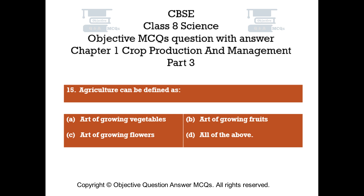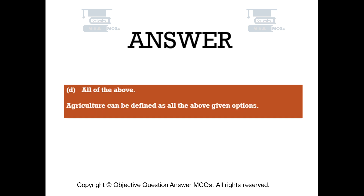Question number 15. Agriculture can be defined as. Option A: Art of growing vegetables. Option B: Art of growing fruits. Option C: Art of growing flowers. Option D: All of the above. The right answer is option D — All of the above. Agriculture can be defined as all the above given options.